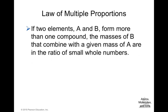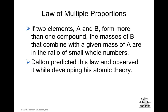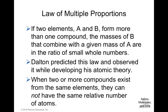The law of multiple proportions states that if two elements A and B form more than one compound, the masses of B that combine with a given mass of A are in the ratio of small whole numbers. Dalton predicted and observed this while developing his atomic theory. When two or more compounds exist from the same elements, they cannot have the same relative number of atoms. For example, H₂O and H₂O₂ — water and hydrogen peroxide — use the same elements but in different ratios: 2 to 1 in H₂O and 1 to 1 in H₂O₂.